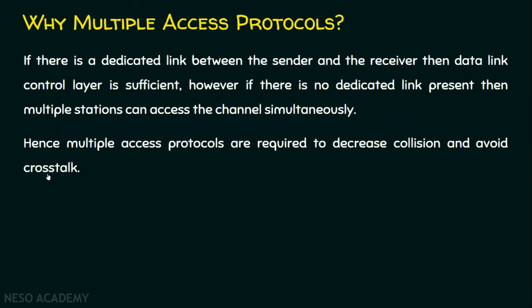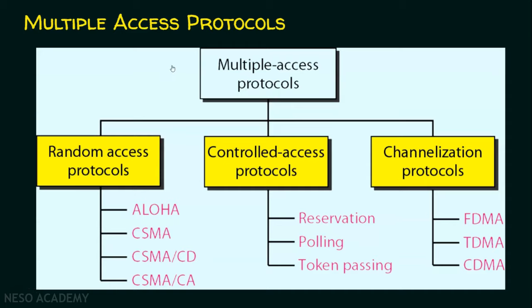Multiple access protocol is mainly necessary for channels that are not exclusively between the sender and the receiver — that is, shared channels. The multiple access protocols involve three types: random access protocols, controlled access protocols, and channelization protocols. Let's start with the random access protocols.